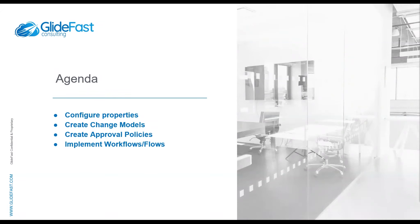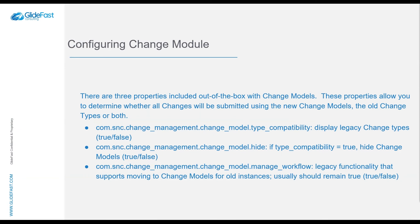There are three properties you should know about. They're not on the change properties page, which is interesting, but you do have to look them up on the sys_property table. The three you need to care about have the words 'change_model' in them. The first one — type compatibility — tells the system whether you want to use your existing type structure: the normal way of doing change where you use the type field to determine whether it's a normal, emergency, or standard change. If you want to run this in addition to change model, you would turn that property to true.